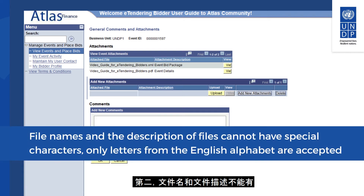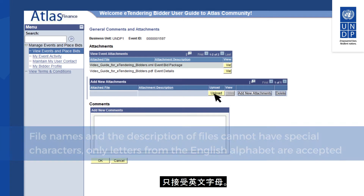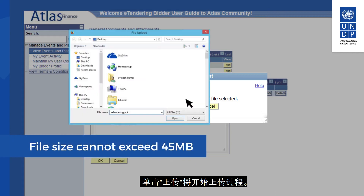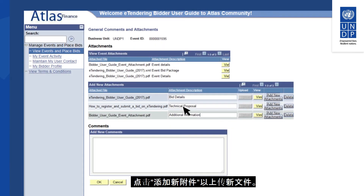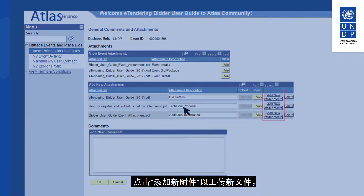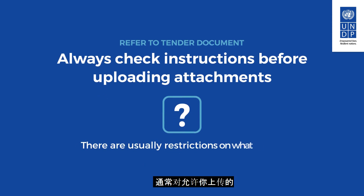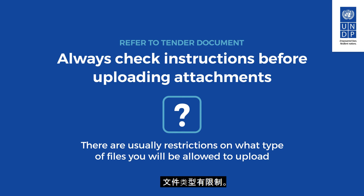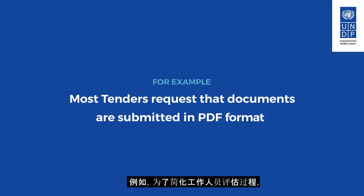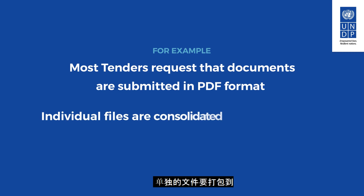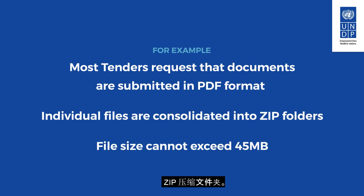File names and descriptions cannot have special characters — only letters from the English alphabet are accepted. Click on Upload to start the upload process, browse through your files, and click Upload once you have selected the file. Click Add New Attachment to upload additional files. Always check instructions in the tender document before uploading, as there are usually restrictions on file types. Most tenders request documents in PDF format and that individual files are consolidated into zip folders. You must read and carefully follow the instructions in the tender documents.